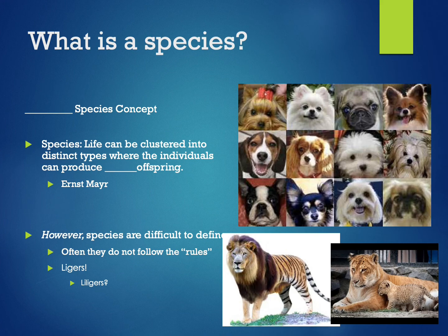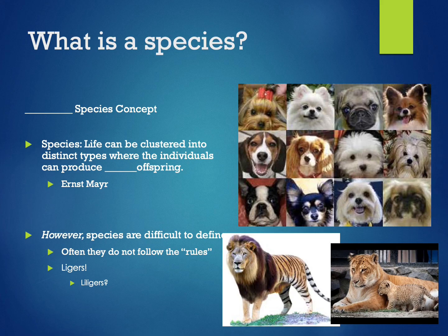So, what is a species exactly? Even a four-year-old can pick out an elephant, a dog, a horse, and a pig, and know these are different entities. Life on Earth can be clustered into distinct types called species. For example, shown here are different species of dogs. Though they are quite similar to one another, they can be easily distinguished in part because there are no intermediate animals that bridge the differences.